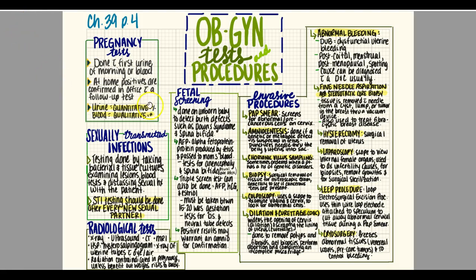A laparoscopy uses a laparoscope to view internal female organs. It is used to diagnose infertility causes, perform biopsies, remove growths, and perform surgical sterilization — tubal ligation is done through laparoscopy. The LEEP procedure (Loop Electrosurgical Excision Procedure) uses a thin wire loop electrode attached to a speculum to cut away abnormal cervical tissue, typically identified during a pap smear.